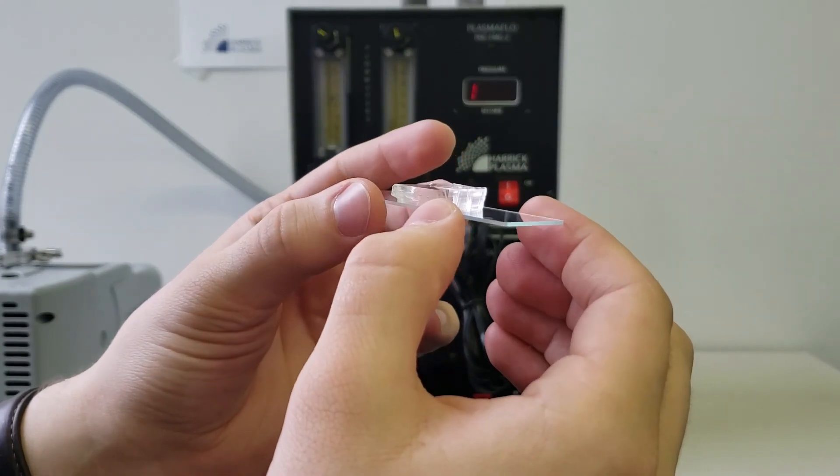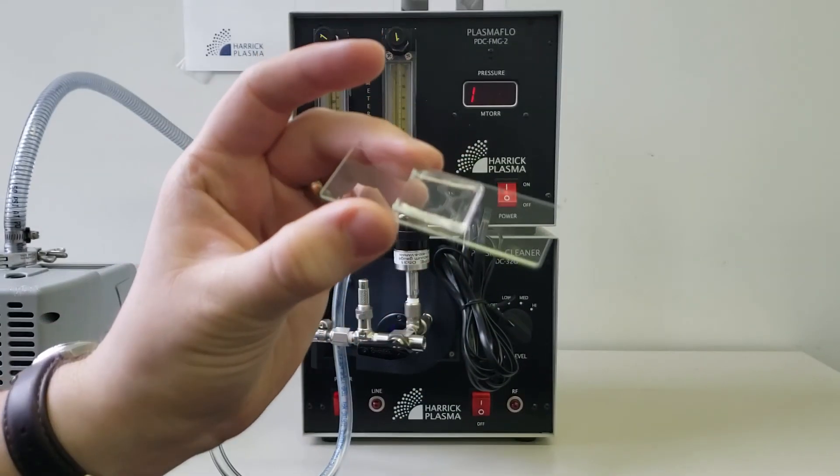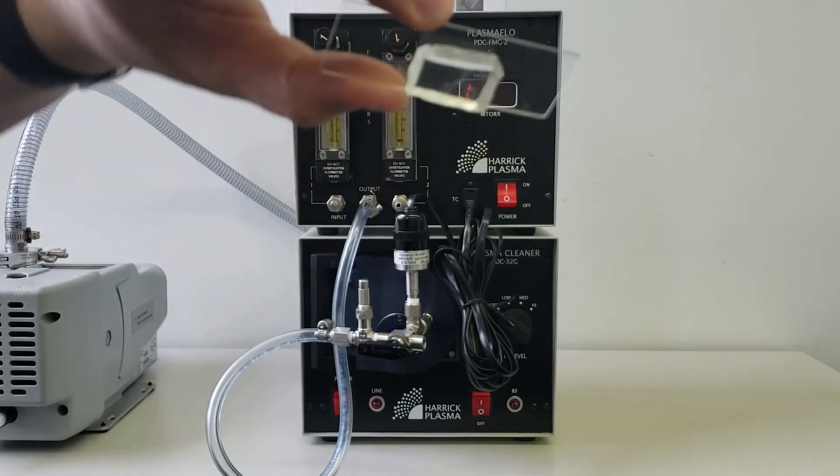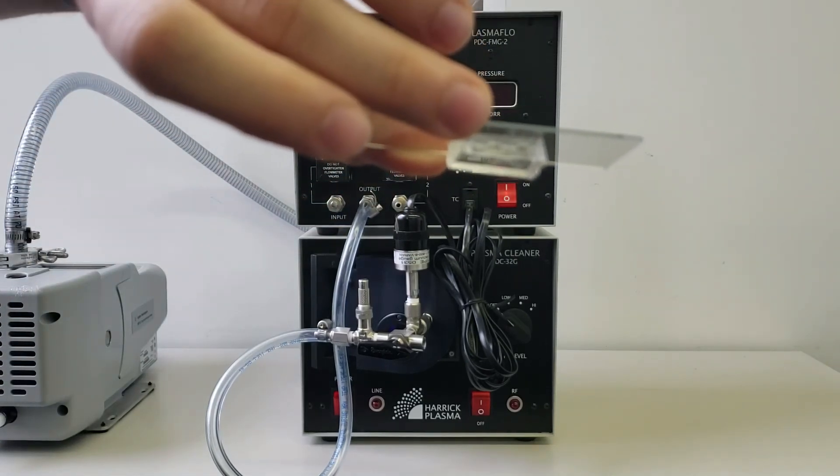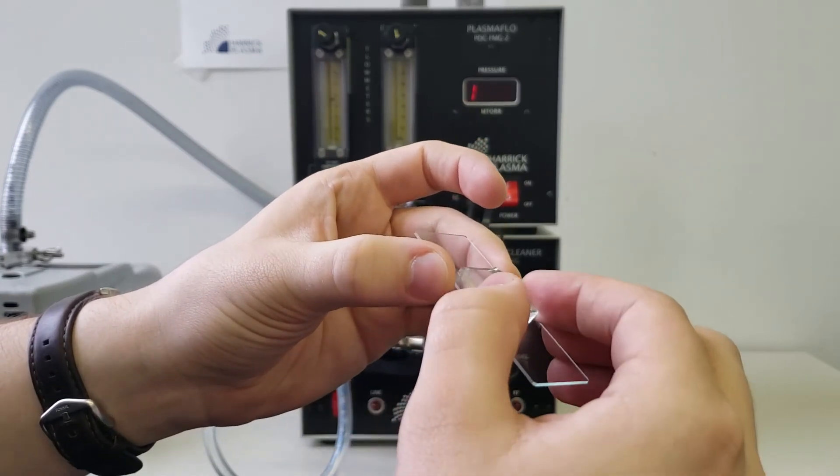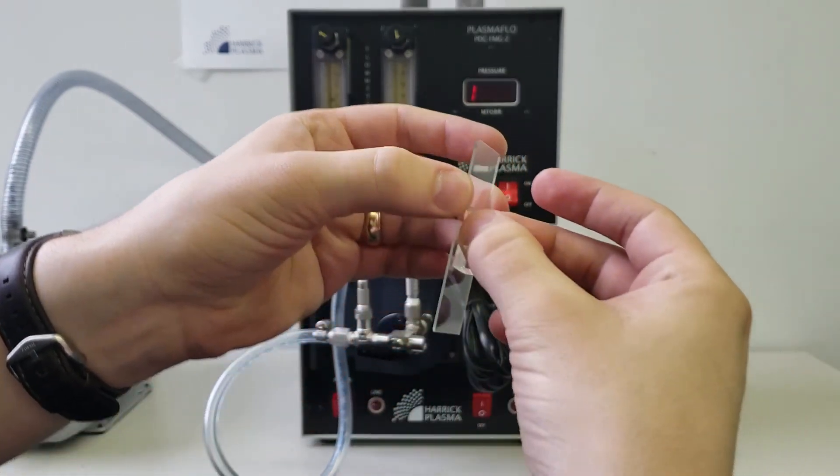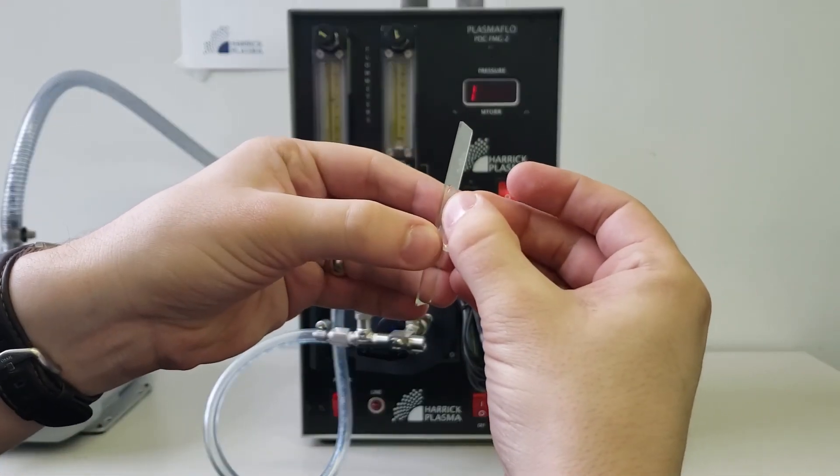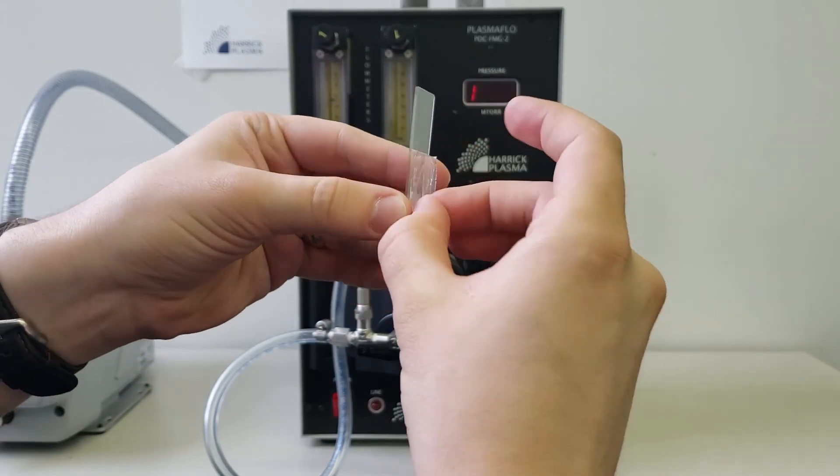The increased surface energy produced by plasma treatment tends to reconfigure to a more energetically favorable, lower energy state over time in hydrophobic materials like PDMS. We recommend bonding and any subsequent processes be performed within 15 minutes to an hour of plasma treatment time.